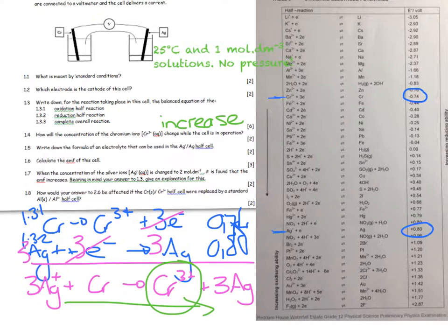Write a formula for an electrolyte that can be used in the silver half cell. I've told you this 100 times over: silver nitrate. Silver has a valency of 1, nitrate has a valency of 1. If you're in doubt, there it is on the table. You really must get into writing all these formulas with nitrates.